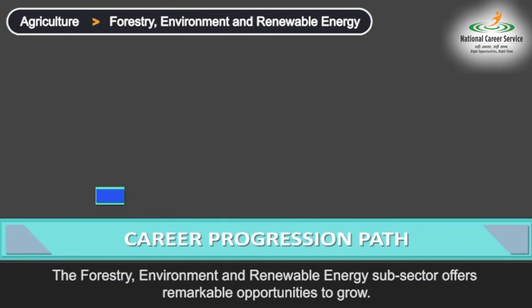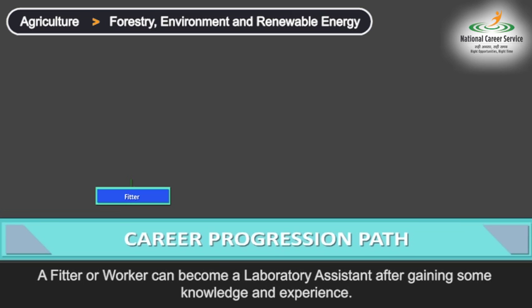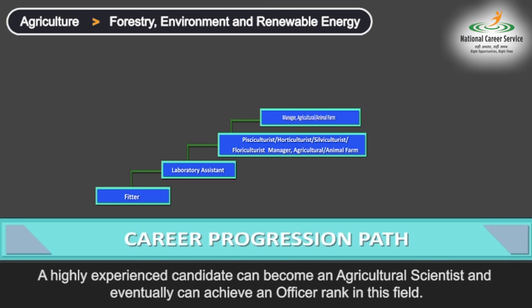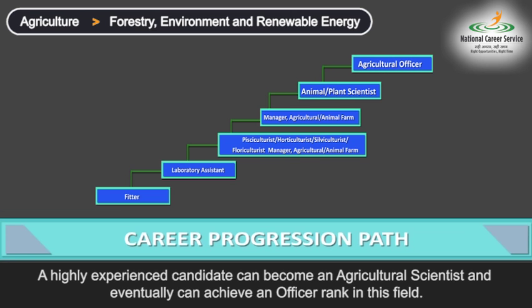The forestry, environment and renewable energy sub-sector offers remarkable opportunities to grow. A fitter or worker can become a laboratory assistant after gaining some knowledge and experience. Then a career as a culturist shall be on the cards, followed by manager at an agricultural or animal farm. A highly experienced candidate can become an agricultural scientist and eventually can achieve an officer rank in this field.